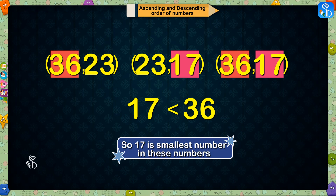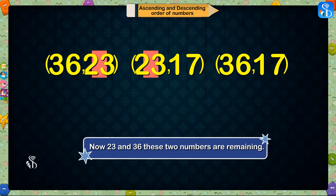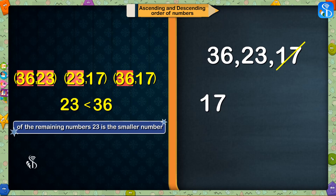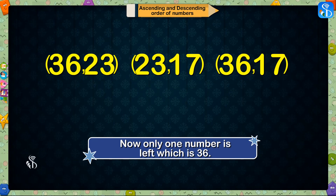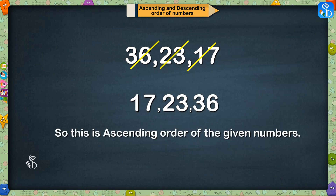So, 17 is the smallest number in these numbers. We will cross out 17 first and write this number on the blackboard. Now, 23 and 36 are the two numbers remaining. From 23 and 36, 23 is the smaller number. So, we will cross out 23 and write it on the blackboard after 17. Now, only one number is left which is 36. So, we will cross out 36 and write it on the blackboard after 23.